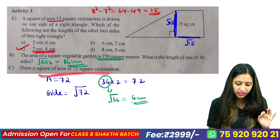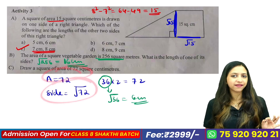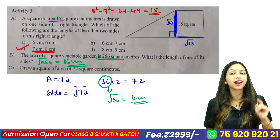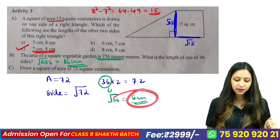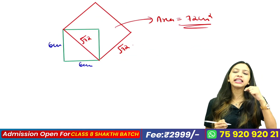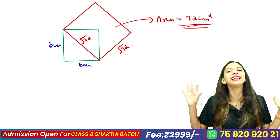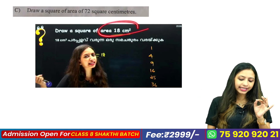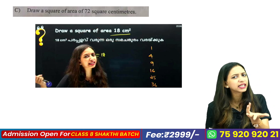This square area is 72. We can find its square root. This area is 72 — we find the root of 72. It is not a perfect square. 36 times 2 — we have to find it: the square root of 36 is 6 cm. So this square has a side of 6 cm, and we can find it on the diagonal.